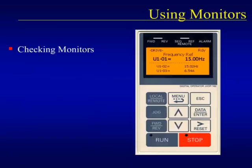Sometimes what prevents the drive from running is the fact that the run command is not being seen by the drive. To check whether the drive is receiving the run command, we will need to use one of the drive's built-in monitors. To check monitors, we need to be in the operation menu. We know we are in the right spot because the top monitor will be the U1-01 frequency reference monitor. Once in the operation menu, we can use the up and down arrow keys to scroll through the monitors to find valuable information.